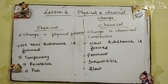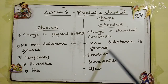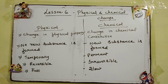तो here no new substances are formed in physical change. But in a chemical change, a new substance is formed — एक नया substance बन जाता है. जैसे milk से curd बनना — here new substance is formed, so it is a type of chemical change.